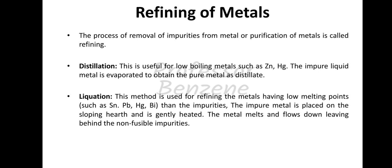The second method is liquation. This method is used for refining metals having low melting points such as tin, lead, mercury, and bismuth. The impure metal is placed on a sloping hearth and is gently heated. The metal melts and flows down, leaving behind the non-fusible impurities, which remain at the top. The pure metal with the low melting point flows down and is collected.